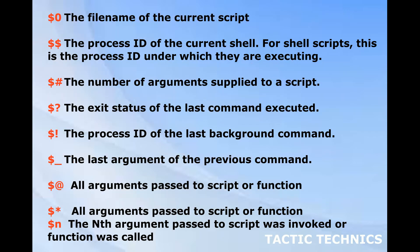Special shell variables: $0 — the file name of the current script. $$ — the process ID of the current shell; for shell scripts, this is the process ID under which they are executing. $# — the number of arguments supplied to a script. $? — the exit status of the last command executed. $! — the process ID of the last background command. $_ — the last argument of the previous command. $@ — all arguments passed to script or function. $* — all arguments passed to script or function. $n — the nth argument passed to the script or function.